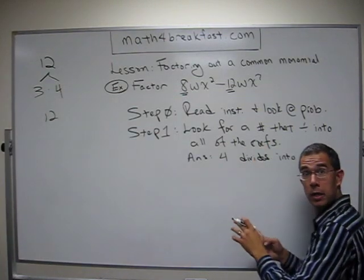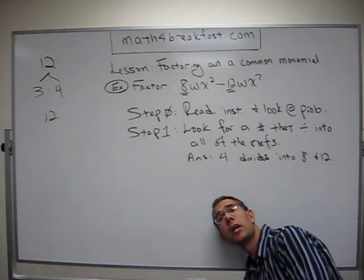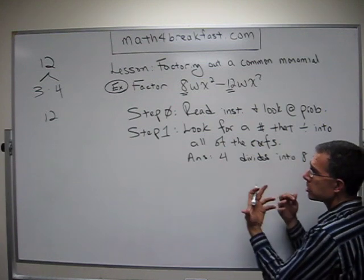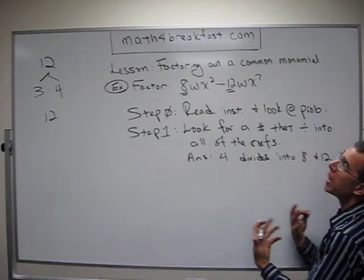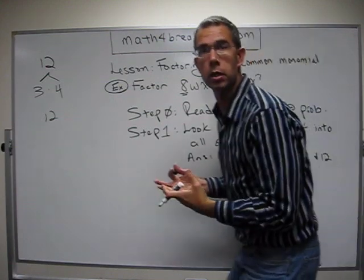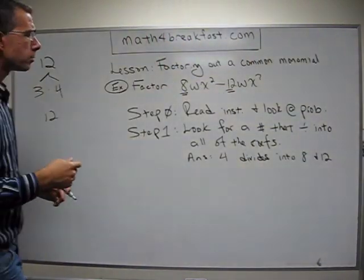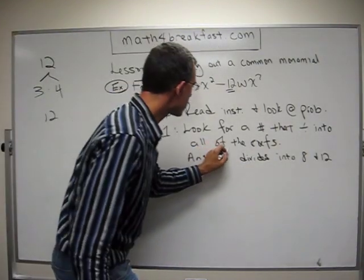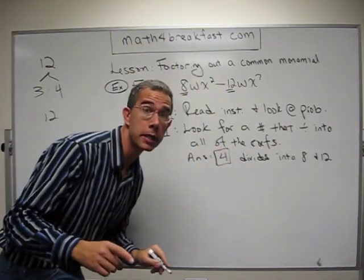4 divides into both 8 and 12. Notice I've come into the kneeling position before the problem to pay respect and reverence and basically to plead for help in doing this problem. No — 4 divides into 8 and 12, so we've got to keep this in mind. 4 is going to help us out later.